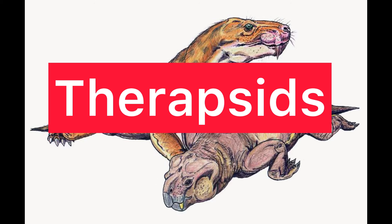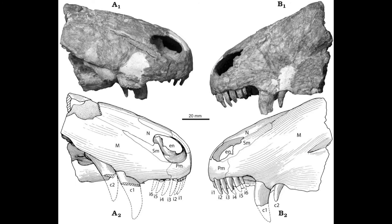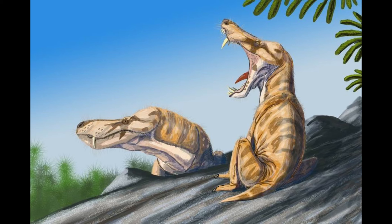Therapsids, the next step towards mammals, were more mammal-like than their pelicosaur predecessors, exhibiting several key adaptations that foreshadowed the characteristics of later mammals. These adaptations included differentiated teeth — incisors, canines and molars — a more erect limb posture, and complex jaw musculature.